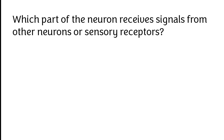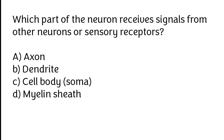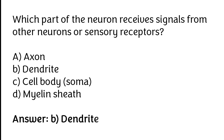Which part of the neuron receives signal from other neurons or sensory receptors? Exxon, Dendrite, Silbory, Mylene sheet. The correct answer is Option B. Dendrite is the part of the neuron which receives signal from other neurons or sensory receptors.